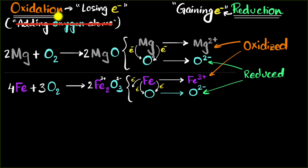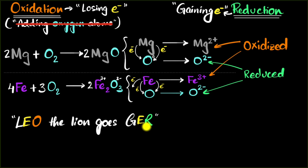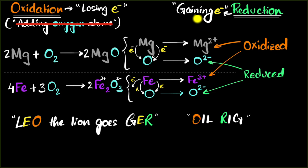How do we remember that oxidation is losing electrons and reduction is gaining electrons? There are a couple of mnemonics. One I like is LEO the lion goes GER — Losing Electrons is Oxidation, Gaining Electrons is Reduction. Another is OIL RIG — Oxidation Is Losing, Reduction Is Gaining. I personally like to think in terms of charge: when I gain electrons I gain negative charge, and therefore it's a reduction. So losing electrons must be oxidation.